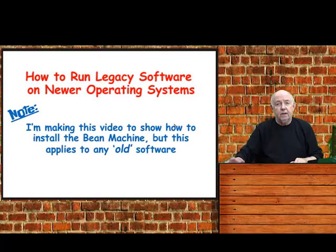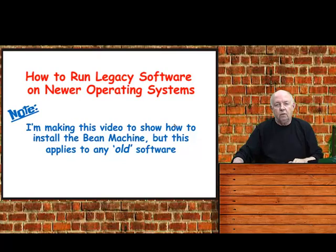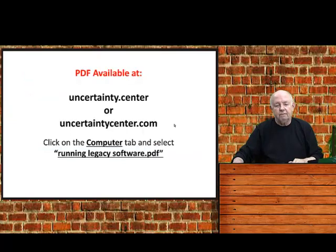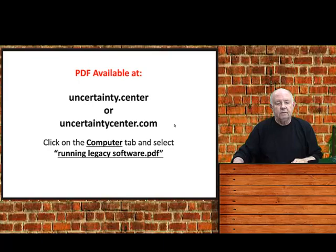In this video, I'm explaining how to get the Bean Machine up and running, but legacy software means any old software, so this should help you get older programs to run if you have them. I have PDFs available at uncertainty.center or uncertaintycenter.com. Just click on the computer tab and then select running legacy software and you can download it.